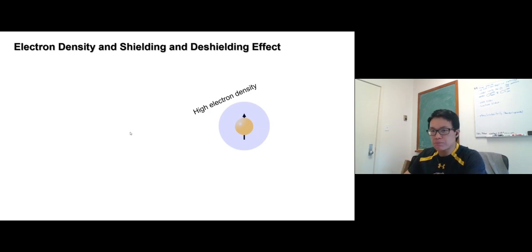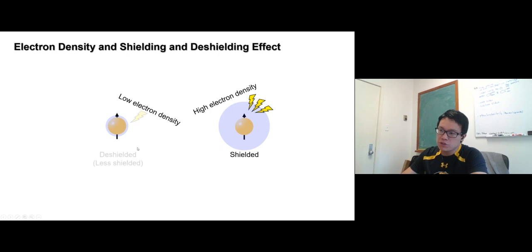If a proton, its nuclei has a large amount of electron, high electron density, we call it shielded. You need a lot of energy to make it feel something, and that energy comes from the magnetic field. If a nuclei has low electron density, you don't need that much energy or magnetic field strength to make it feel something. We call it deshielded.